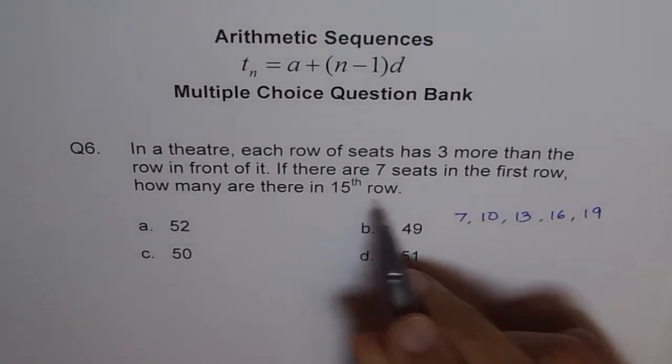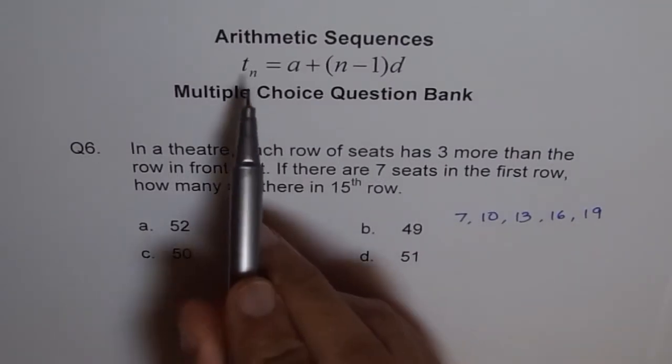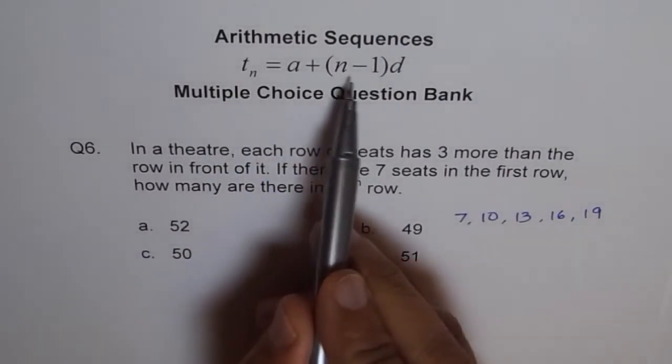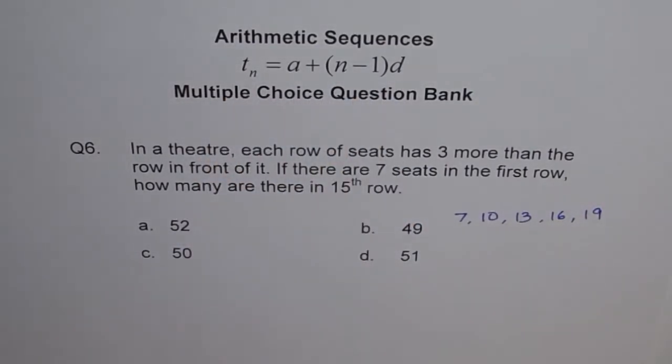Like this, we can go on to 15th row and find our answer. This is one way of finding solution, correct? Now, second way is to find a general term and like this, Tn equals to A plus N minus 1 into D. My purpose of writing this formula here is that you should look at it and try to remember it. It is very simple to remember.